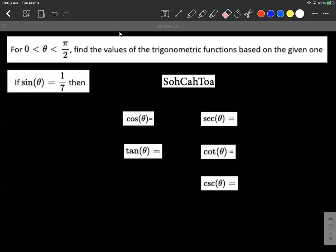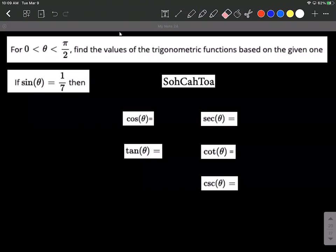On this example, we're told that our angle theta is between 0 and pi over 2, which basically means it's in the first quadrant, and we're tasked with finding all the other trigonometric ratios if we're given that sine of theta is 1 over 7.